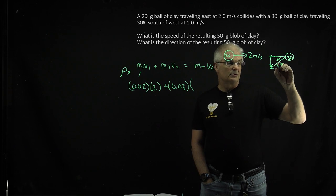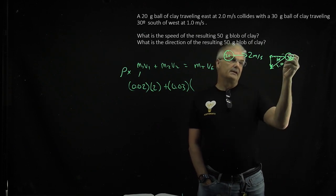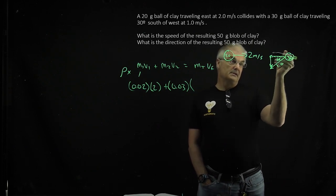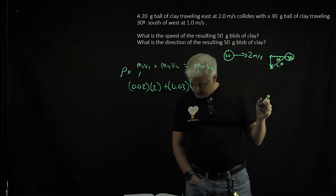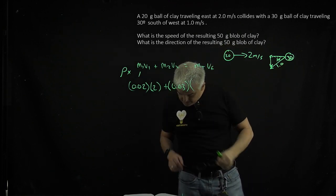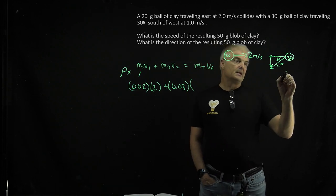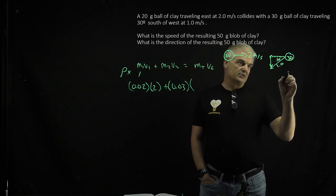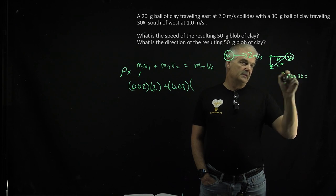I want to find Vₓ here, and it's going to be negative. Vₓ is—well, it's a cosine. Cos 30° equals the adjacent, which is Vₓ, over the hypotenuse, which is 1.